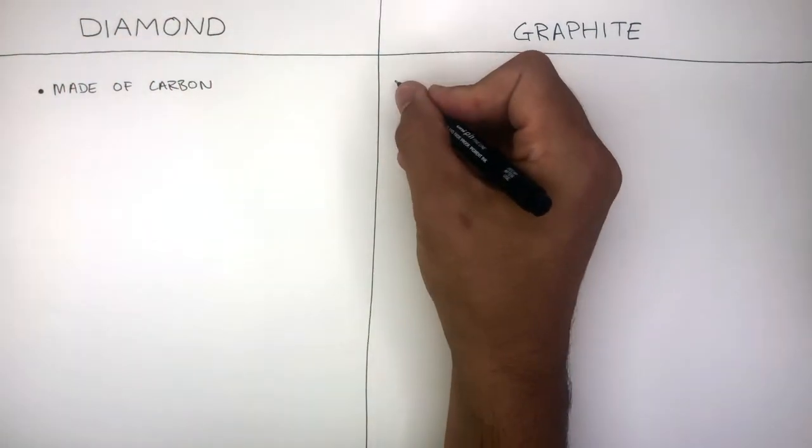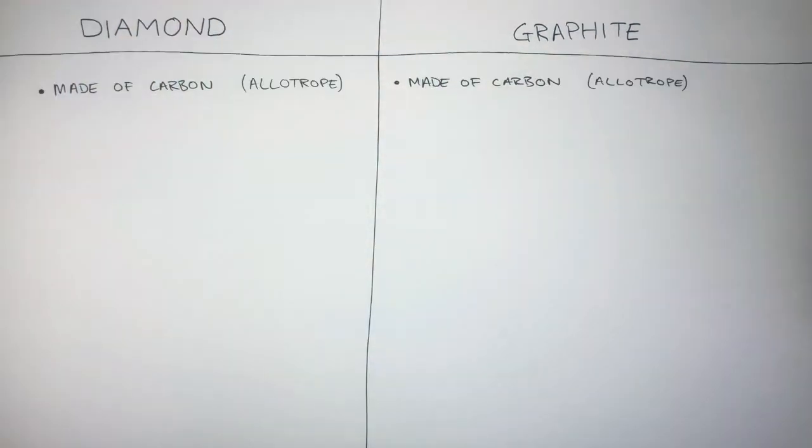We're now going to summarize the similarities and differences between diamond and graphite. Diamond is made of carbon and graphite is made of carbon, and they're both allotropes of carbon as they have different structures.